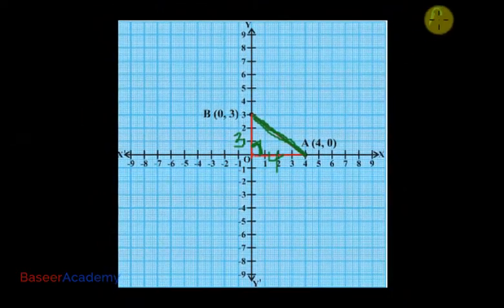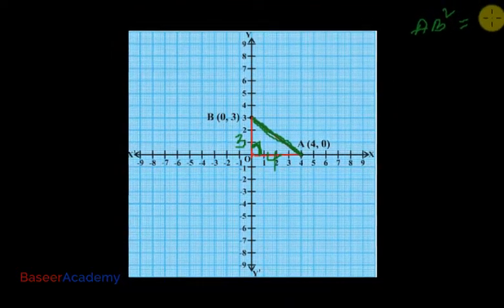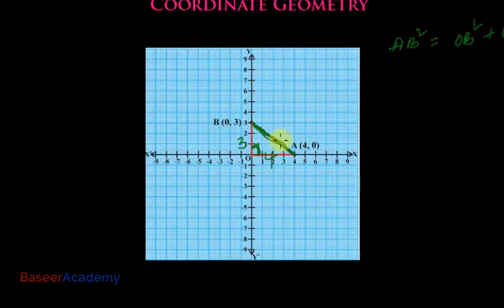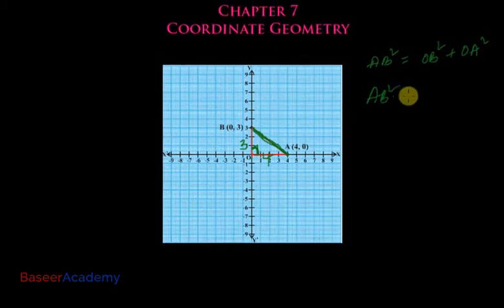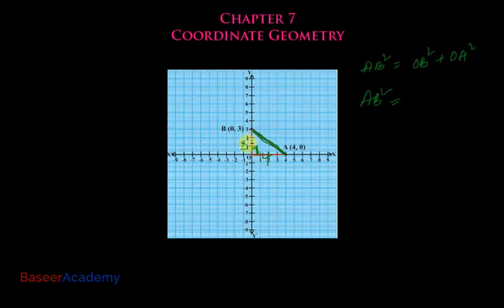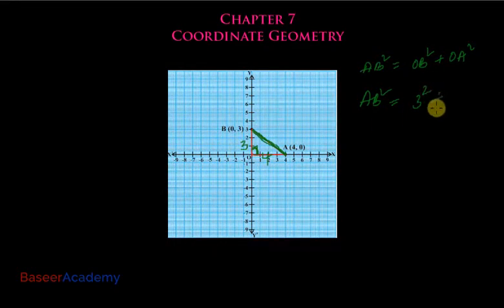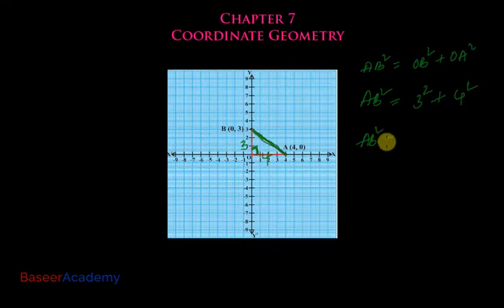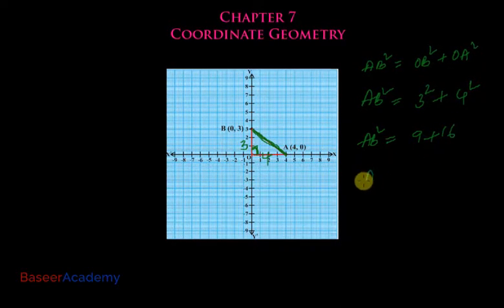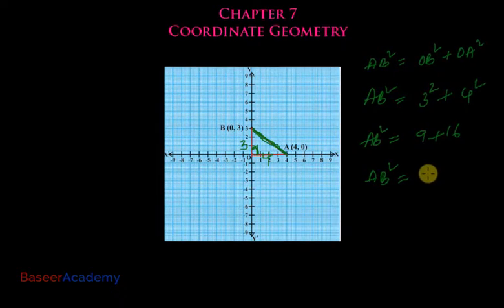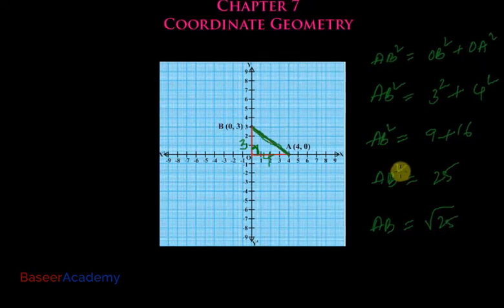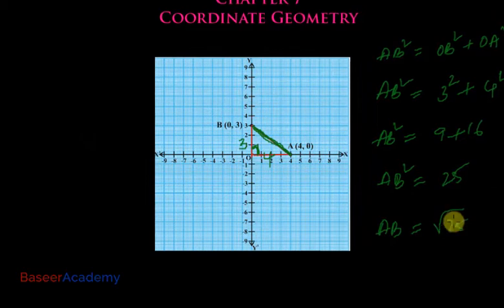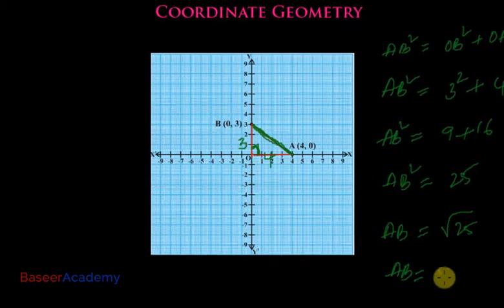Applying the Pythagorean theorem: hypotenuse squared equals the sum of the squares of the other two sides. AB² = OB² + OA² = 3² + 4² = 9 + 16 = 25. Therefore AB = √25 = 5 units.